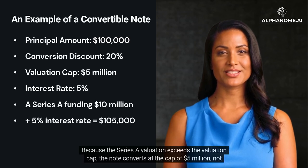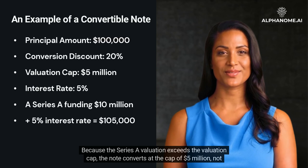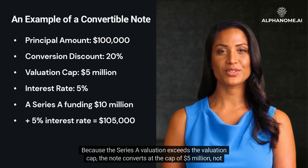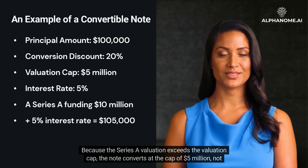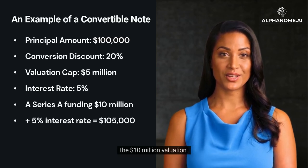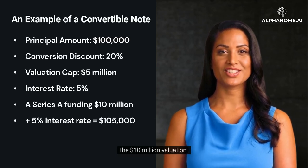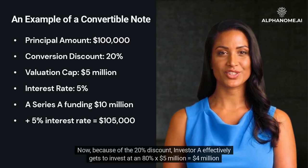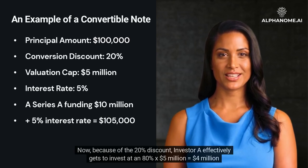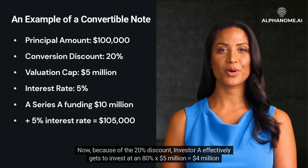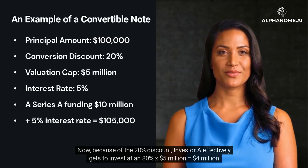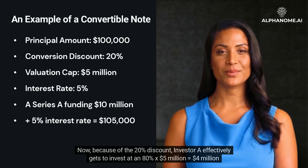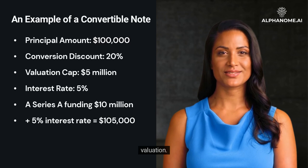Because the Series A valuation exceeds the valuation cap, the note converts at the cap of $5 million, not the $10 million valuation. Now, because of the 20% discount, investor A effectively gets to invest at an 80% × $5 million = $4 million valuation.